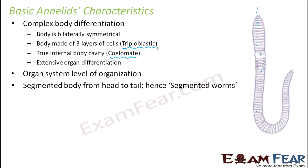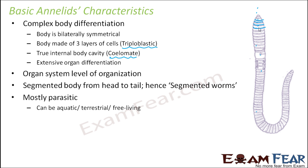The body is segmented from head to tail — hence they are called segmented worms. Each partition is called a segment, and this process is called segmentation. They are mostly parasitic, depending on others for their food, and can be aquatic, terrestrial, or free-living, though most annelids are terrestrial. Earthworm, being an annelid, follows all these characteristics and is obviously mobile — it can move from one place to another.